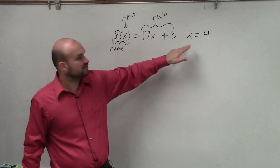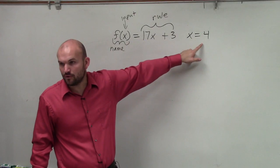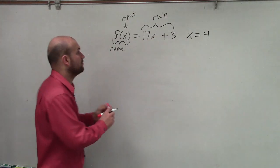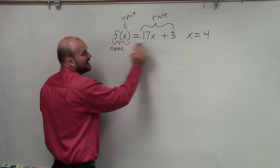So here, they're saying the value of my input is x is equal to 4, OK? So x is equal to 4. So what I do is I replace all the x's with 4.